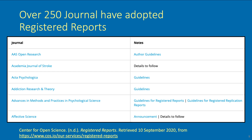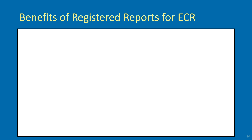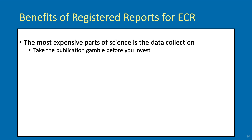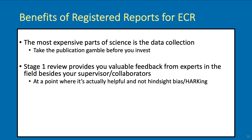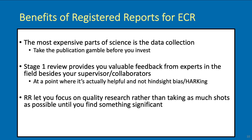New research practices are most likely to be spearheaded by early career researchers. Therefore, for any scientific initiative it is important to onboard not only faculty, but also postdocs, grad students and undergraduates. How can Registered Reports be beneficial to this demographic? In a career stage when publication pressure is high and resources are scarce, it is important to be resource-conscious. The most expensive part of science is often the data collection. Via Stage 1 review and in-principle acceptance, it is possible to take the publication gamble before investing. Stage 1 review provides valuable feedback from experts in the field besides your supervisor and collaborators, at a point where it is actually helpful — the design stage. Registered Reports let you focus on quality research rather than taking as many shots as possible until stumbling upon a significant result. Lastly, Registered Reports can protect you from scientific misconduct imposed by superiors.